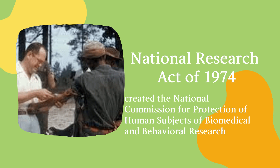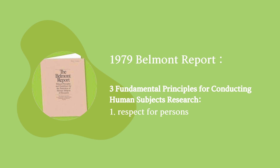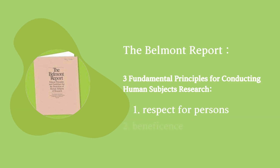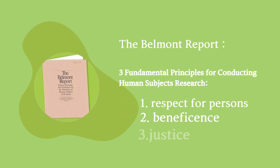In 1974, the National Research Act was signed. It created the National Commission for Protection of Human Subjects of Biomedical and Behavioral Research, which led to the 1979 Belmont Report that states three fundamental principles for conducting human subject research: one is respect for persons, two is beneficence, and three is justice.